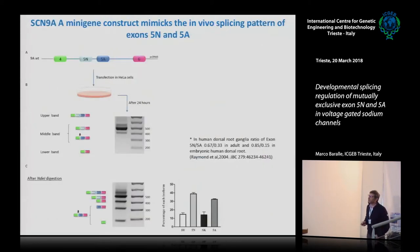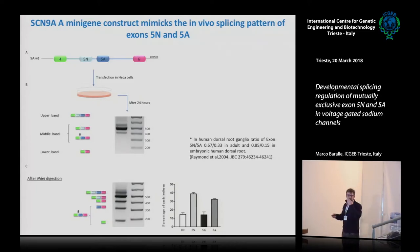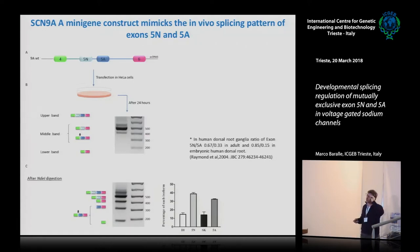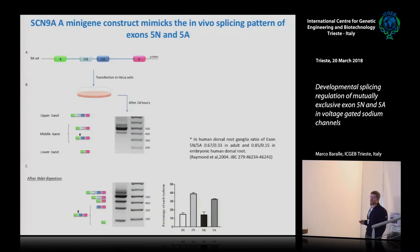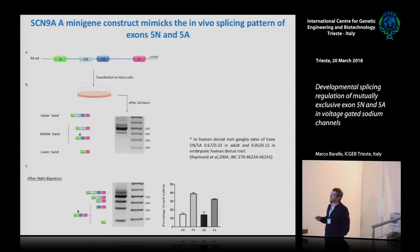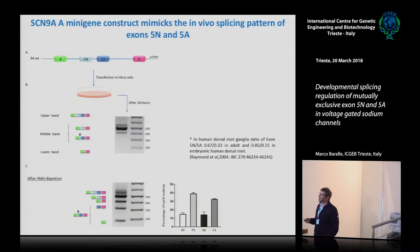To study the mutually exclusive splicing of these two exons, we used a mini-gene system, since this channel is expressed in dorsal root ganglia and the tissue is quite inaccessible. I need to explain the readout system in detail: due to the fact that the two exons are identical in size, when exon 4 joins directly to exon 5A, it creates an NDE restriction site.